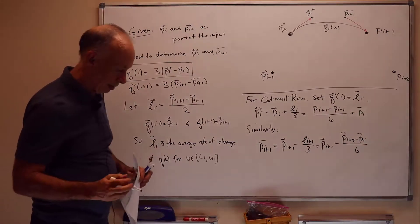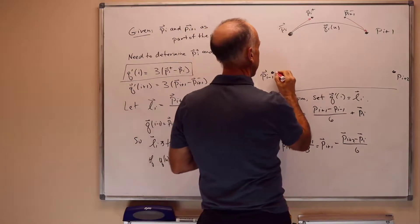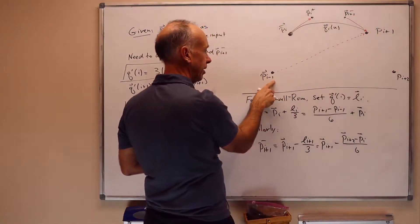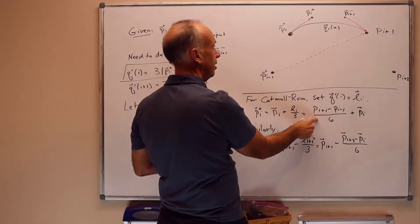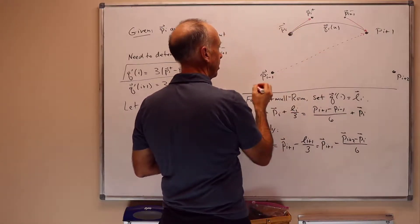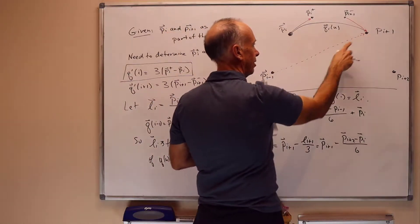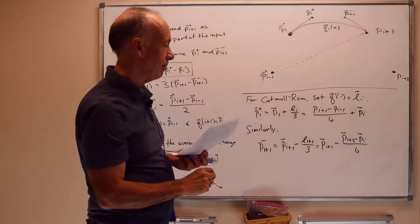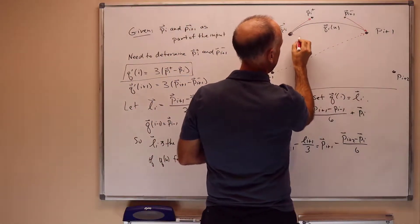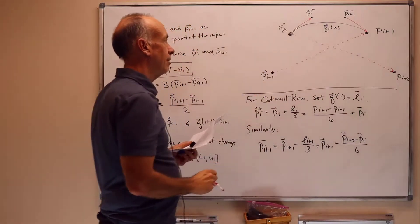To recap: PI+ is calculated by taking the vector joining PI−1 to PI+1 and dividing by 6, then adding PI. So the slope of Q at PI is parallel to the line segment joining PI−1 and PI+1, assuming that's non-zero. And likewise, the slope at PI+1 is parallel to the line segment joining PI to PI+2.